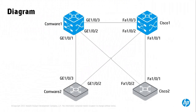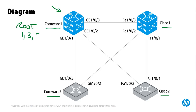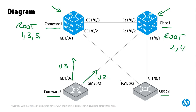The topology consists of four switches: two HP switches running the Comware operating system and two Cisco switches running Cisco IOS. Comware 1 will be configured as the root for VLANs 1, 3, and 5, and Cisco 1 will be configured as the root for VLANs 2 and 4. That will allow for load sharing where VLAN 3 traffic uses one uplink, VLAN 2 traffic another uplink, and VLANs 5 and 4 their respective uplinks.